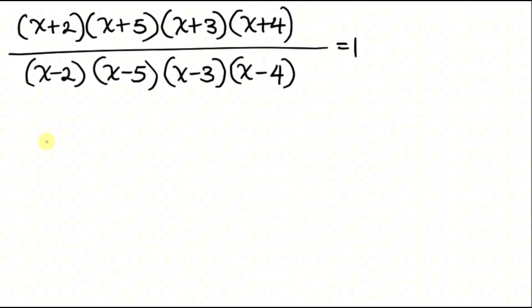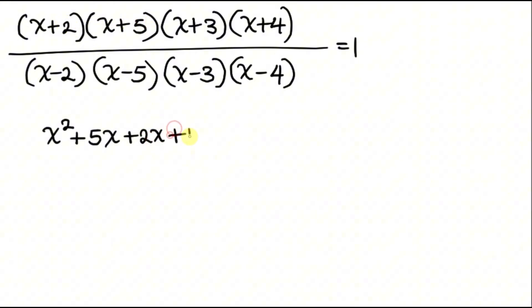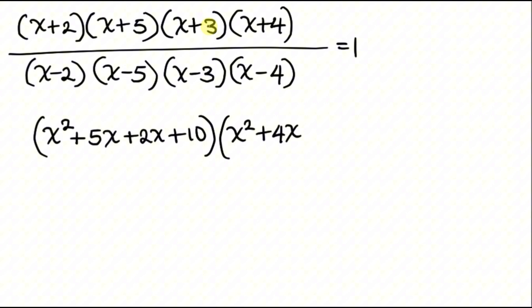Now let's multiply. We have x times x = x², plus x times 5 = 5x, plus 2 times x = 2x, plus 2 times 5 = 10. Now multiplying the other pair: x times x = x², plus x times 4 = 4x, plus 3 times x = 3x, plus 3 times 4 = 12.